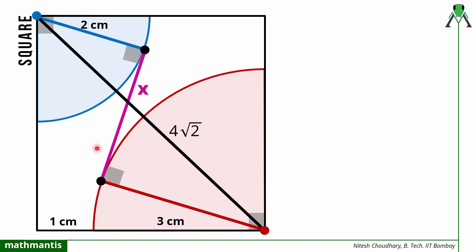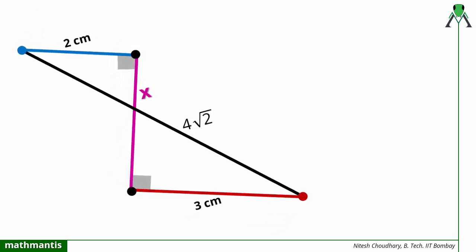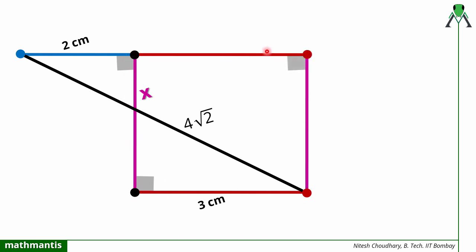Now we have to find the value of x, considering the two 90-degree triangles. Let me rotate the figure to explain it better. Now I will complete a rectangle by drawing a line from this point parallel to the radius line, and from this point parallel to the common tangent. This line is parallel to the other, and all angles here are 90 degrees, so this forms a rectangle. If this side is 3 centimeter, this side must also be 3 centimeter, and if one side is x, the opposite side is also x.